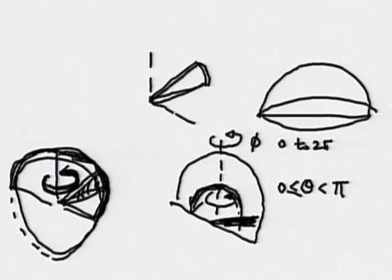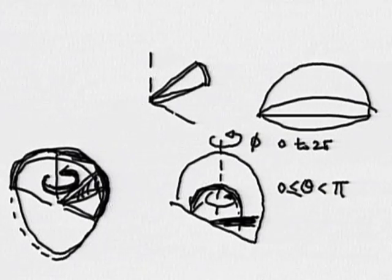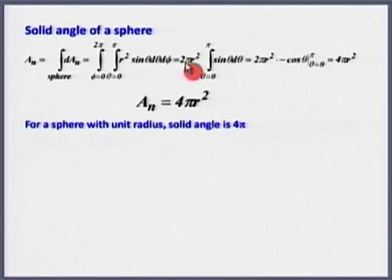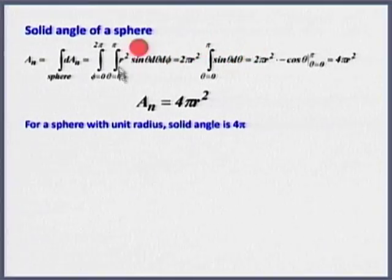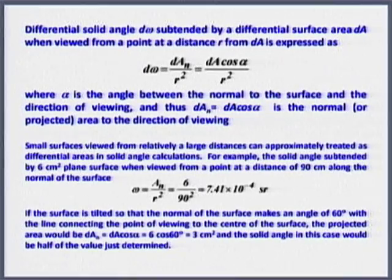So instead of going from 0 to 2π I can go from −π to +π and multiply by 2 because it is an even function. So this 2πr² represents the surface area of a hemisphere; that times 2 would give you the surface area of a solid sphere — giving 4πr².